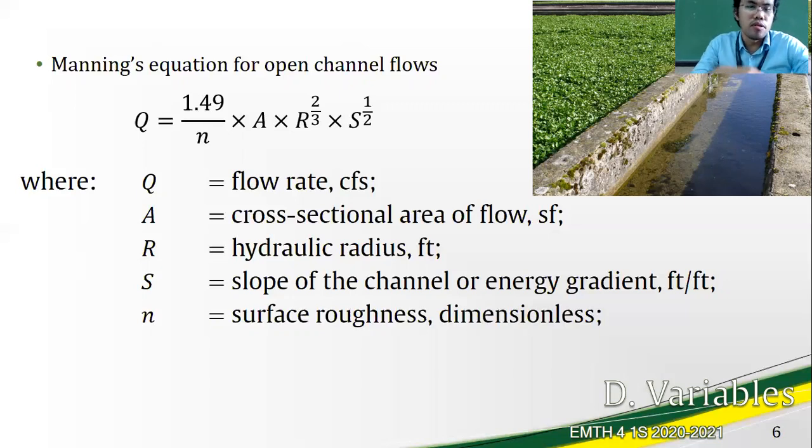Another example of predictor and criterion variables are those of drying equations, which are also empirical in nature. Usually regression is used to predict the relationships of temperature, air velocity, relative humidity to the drying rate of crops such as rice or coconut meat.